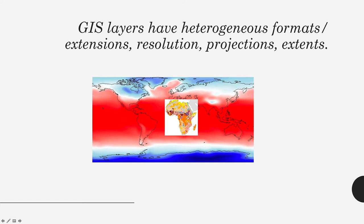The main problem when helping students work with their environmental data is that they need to understand that GIS layers are heterogeneous — they have different formats, different resolutions, different projections, and different extents. When you are preparing your layers, everything needs to be the same: the same extent, the same resolution, the same projection, because if not the layers are not going to match.